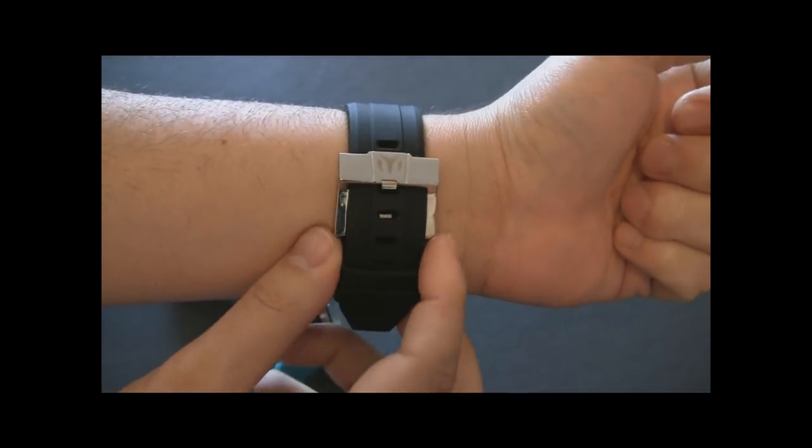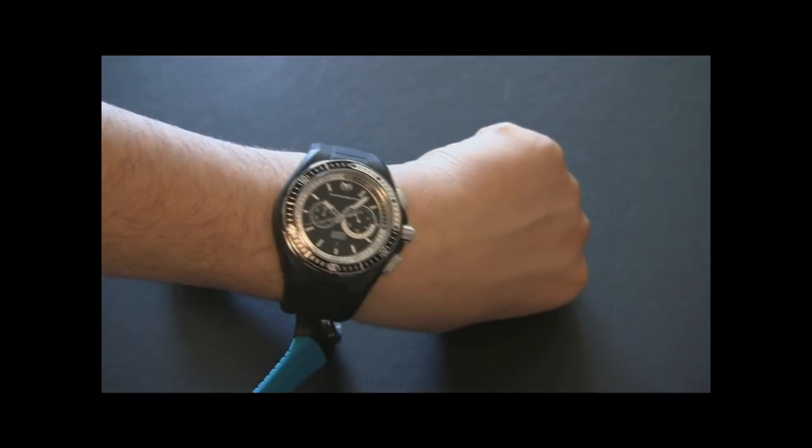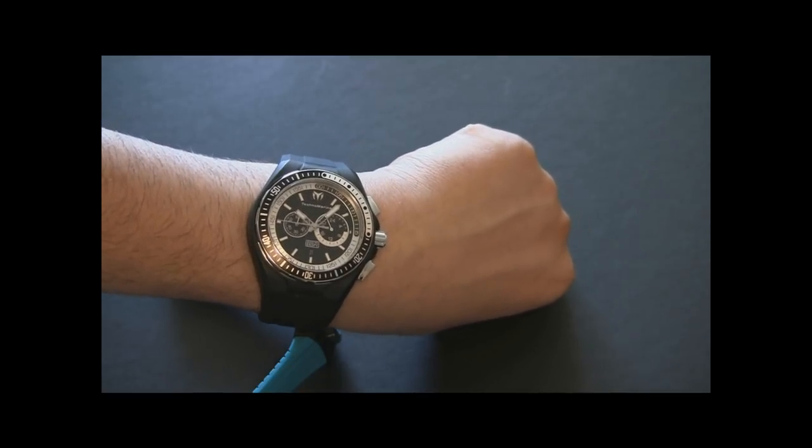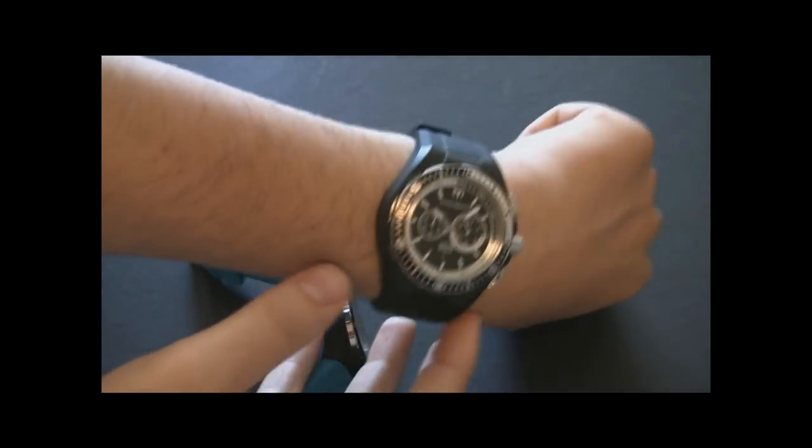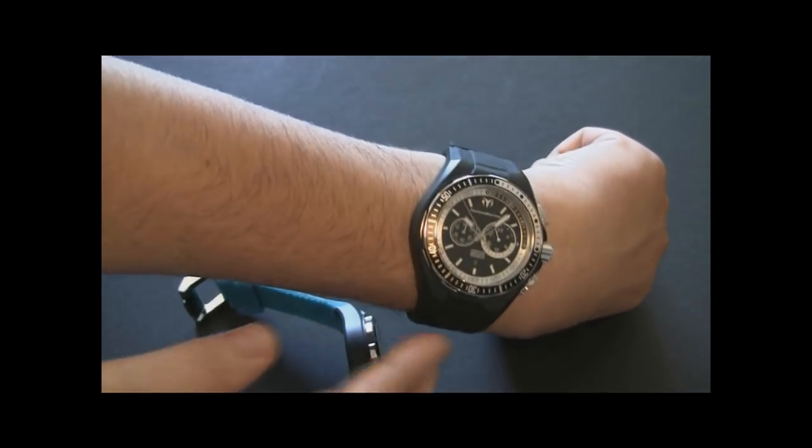Look at that big chunky looking buckle there. That's really cool. Techno Marine is a marine themed watch, hands down. So these are all going to be ocean-y feeling dive watch style. And both of these watches are water resistant to 200 meters, which is great.